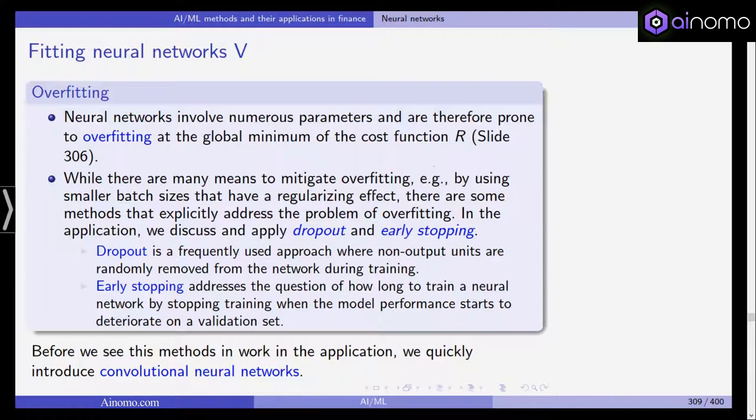And we have some stopping rule that determines that training is stopped when the model performance starts to deteriorate on a validation set. So in a sense, we are already including the validation set in our training. And if we see that actually the model seems to overfit and the model seems to learn only based on the training sample and doesn't generalize well, we stop. So this is what we will see in the application.